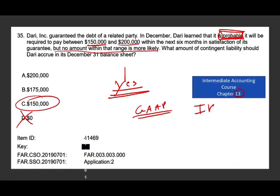Now, if the question asks what would happen under IFRS rules, under IFRS you choose the midpoint, so the answer would have been $175,000. Be careful: on the CPA exam, if they don't specify, it's GAAP. If it's IFRS, they will specify. Under IFRS, the accrual would be $175,000 — they use the midrange if you have a range.